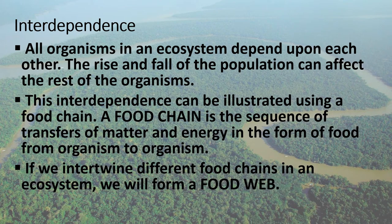Interdependence: all organisms in an ecosystem depend upon each other. The rise and fall of the population can affect the rest of the organisms. This interdependence can be illustrated using a food chain — a food chain is the sequence of transfer of matter and energy in the form of food from one organism to the next. If we intertwine different food chains in an ecosystem, we will form a food web.